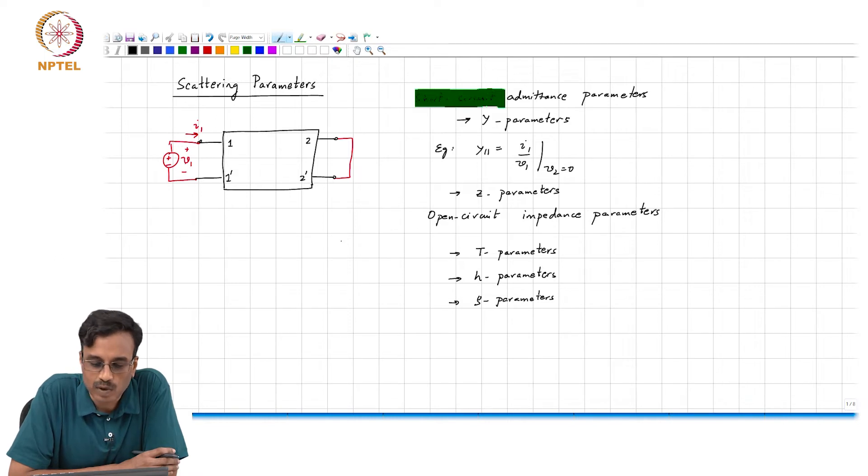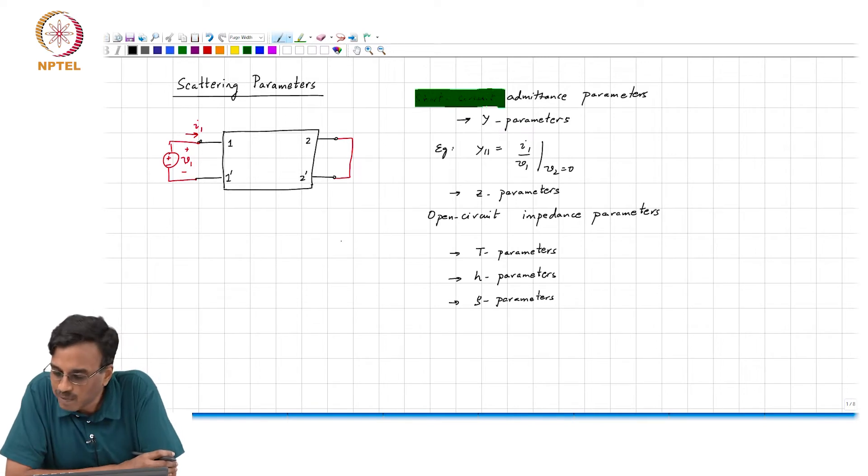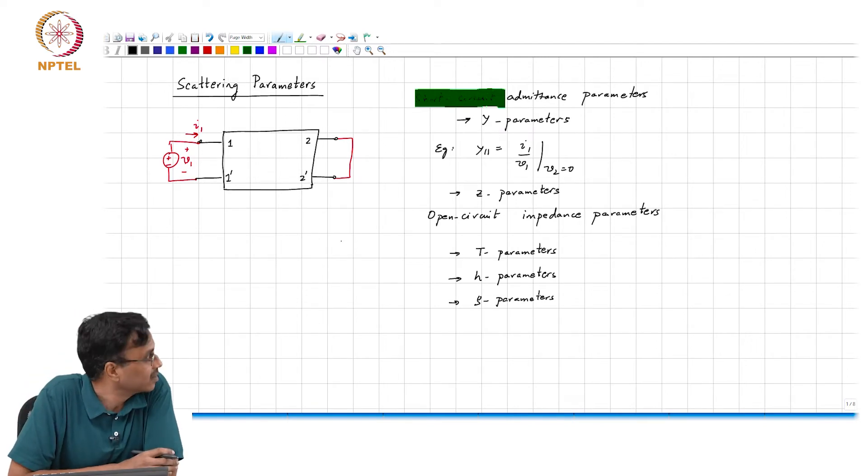Now, the question is, there are already enough - every alphabet seems to have one parameter set. There are a, b, c, d parameters, we have missed e, f, there is g, there is h, there is y, z. So the obvious question is, why do we need one more set of parameters that describe the same old two-port all over again? Clearly, if you know one set, you know all the rest.